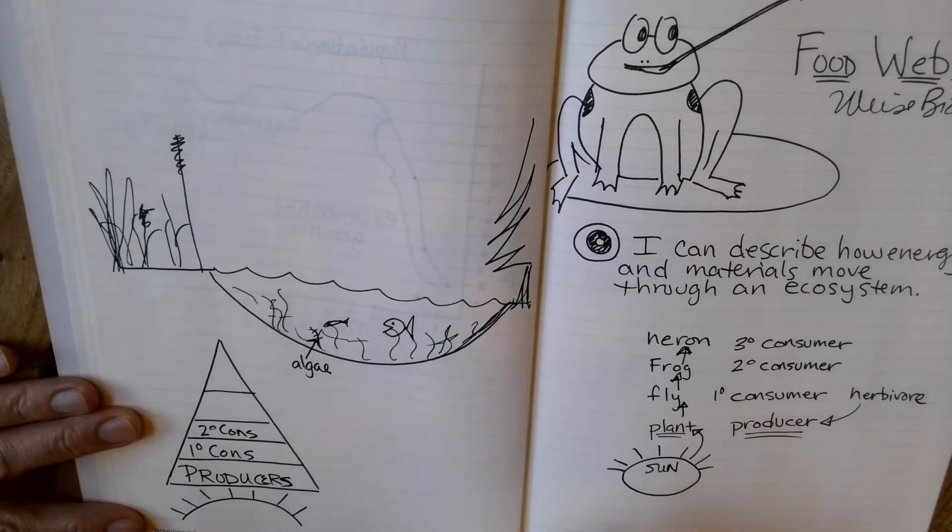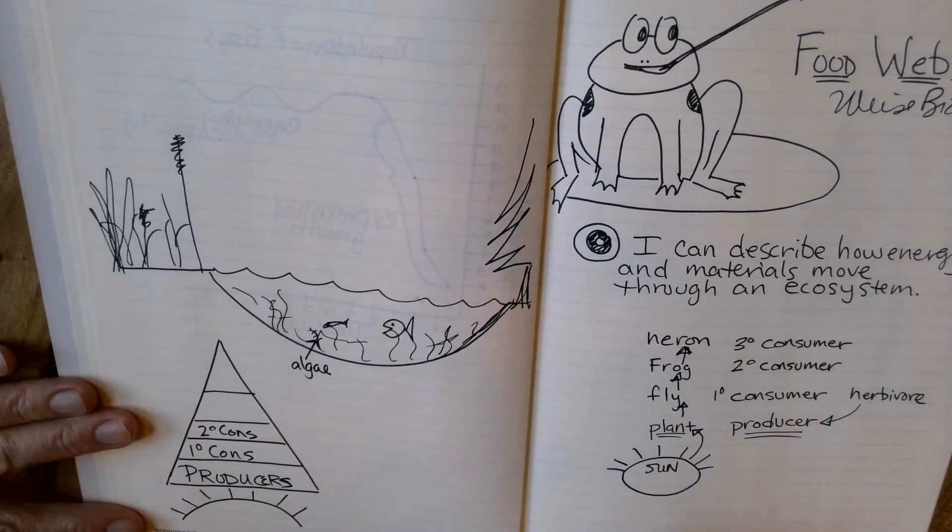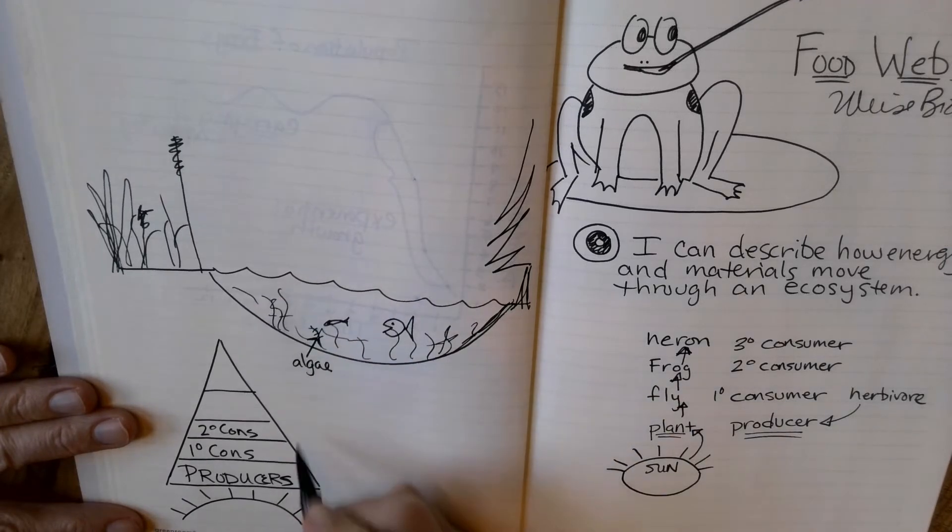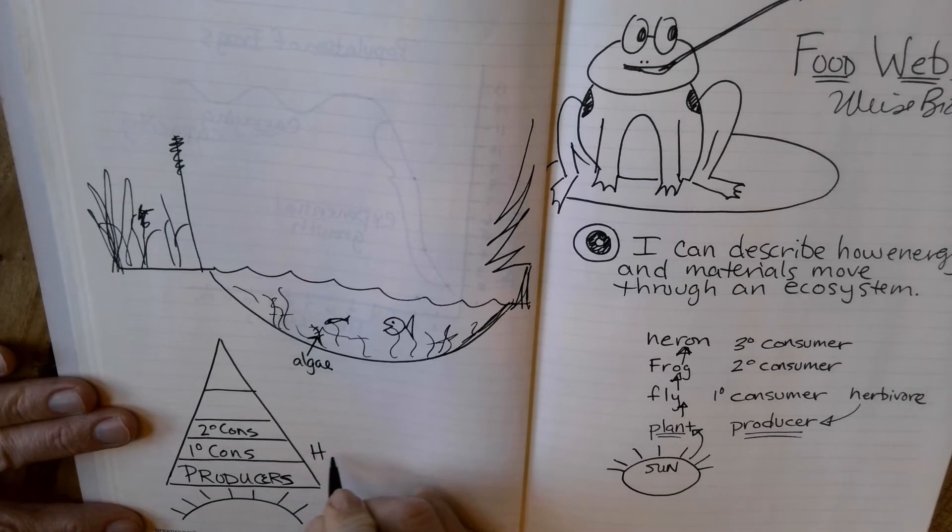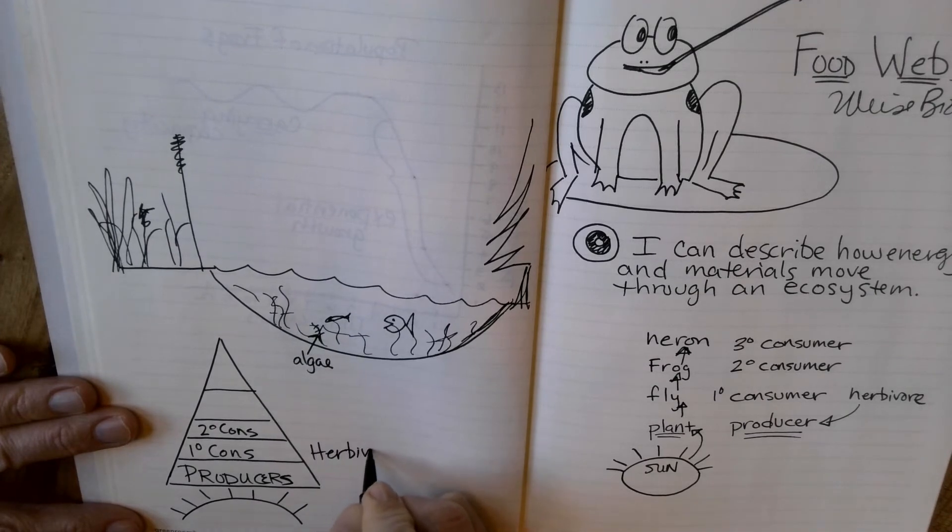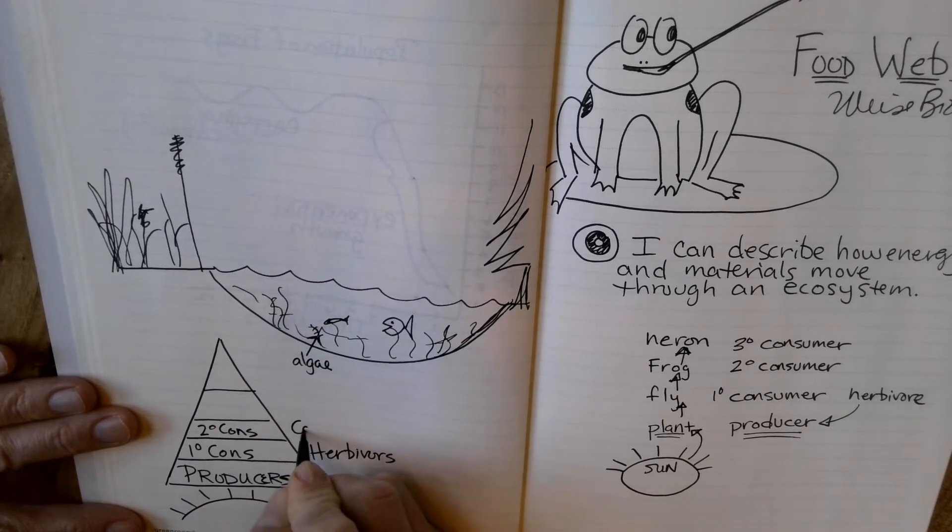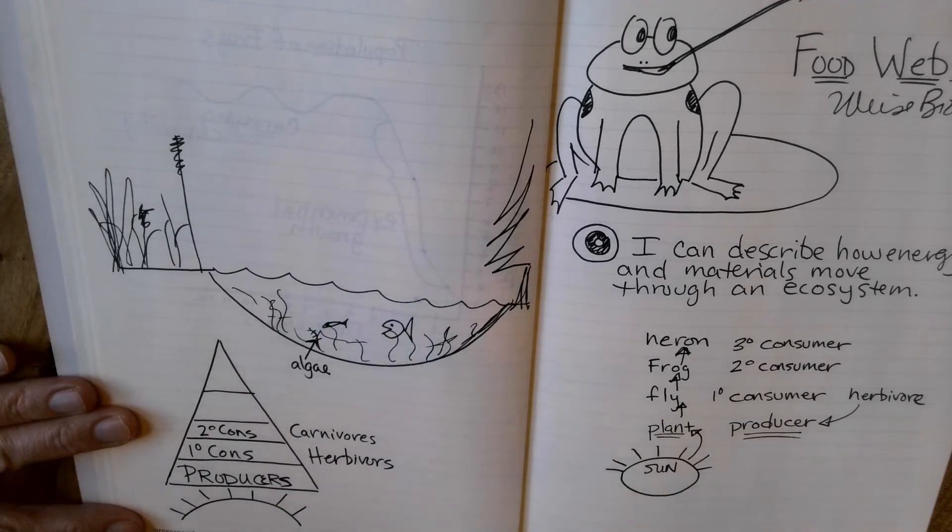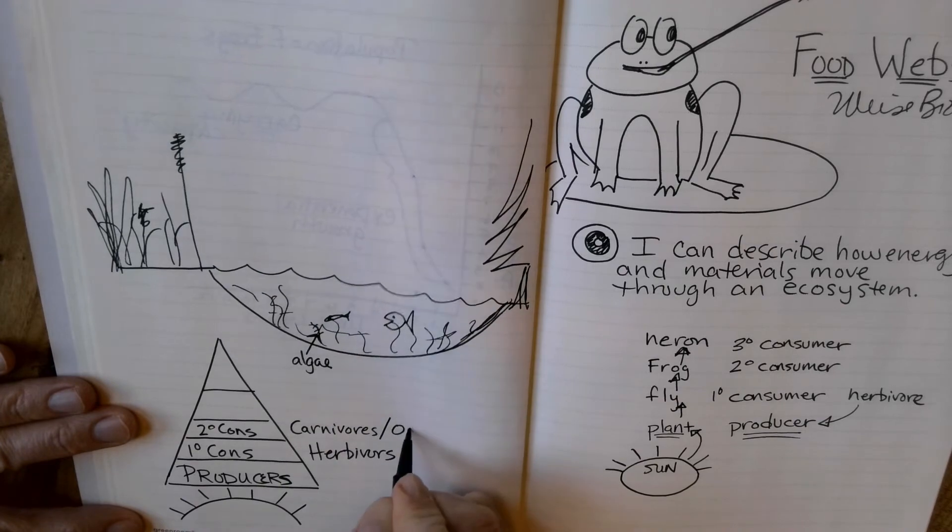So this fish eats that guy. Now we have a secondary consumer. He would also be considered a carnivore if he's eating a fish. So these primary consumers are our herbivores. And then we have carnivores, which sometimes end up being omnivores.